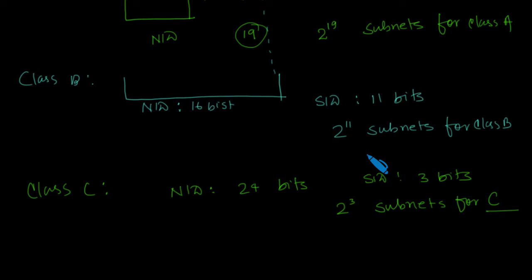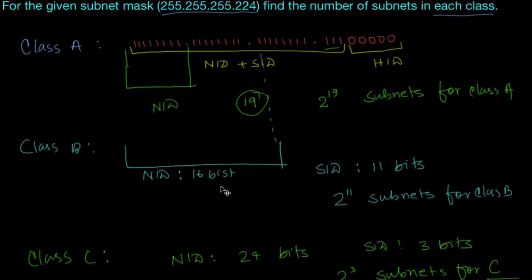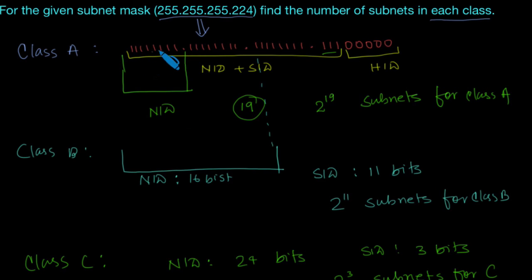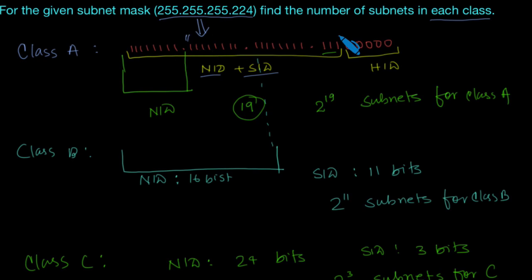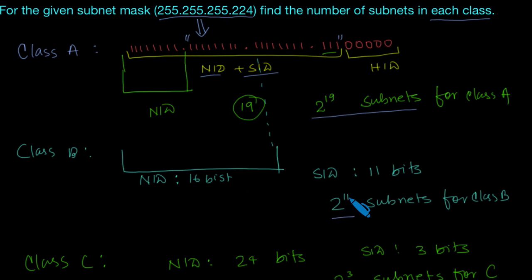To summarize: in a subnet mask, the ones are formed by NID and SID. For Class A, the NID bits are the first octet, so the remaining ones — 19 bits — are the subnet ID bits, giving 2^19 subnets. For Class B, 2^11 subnets, because the network ID is 16 bits.